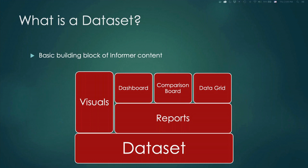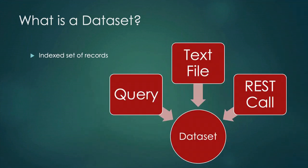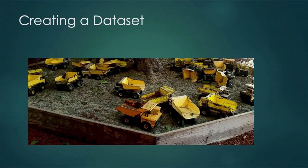What is a data set? A data set is the basic building block of Informer content — things like visuals or reports like dashboards, comparison boards, and data grids. More formally, a data set is an indexed set of records, and those records can come from a number of different sources such as a query, a text file, or a call to some REST endpoint in some application that returns a structured result set. All of those can be used to create data sets.